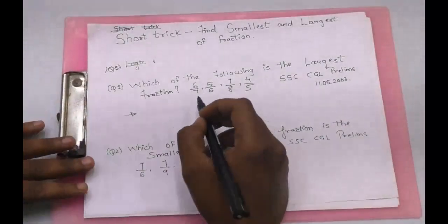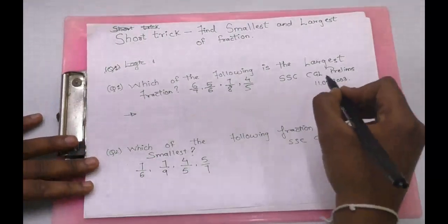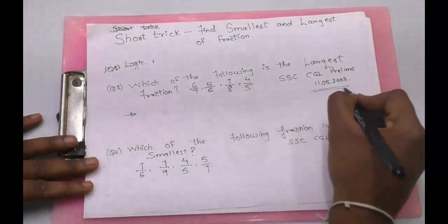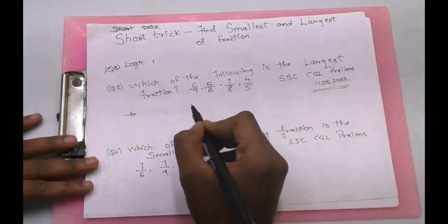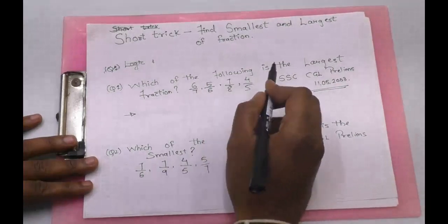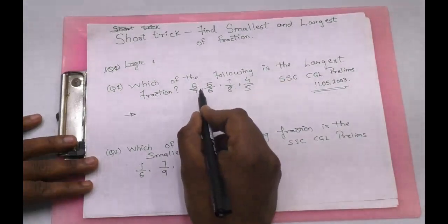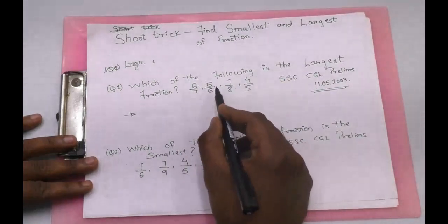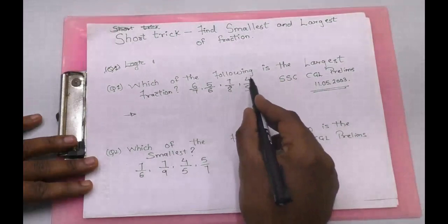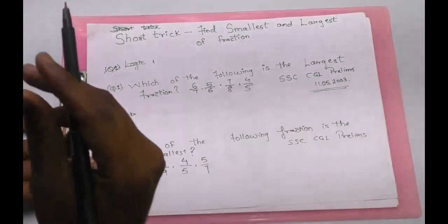This is the first question which appeared in SSC-CGL 2003: which of the following is the largest fraction? The options are 6 by 7, 5 by 6, 7 by 8, and 4 by 5.